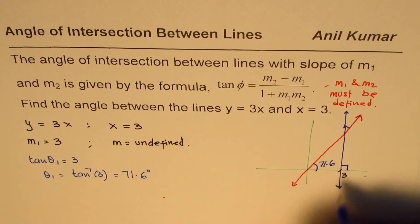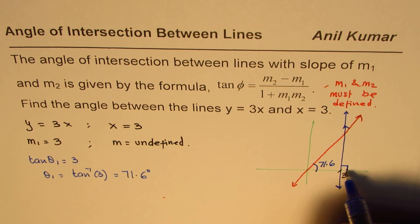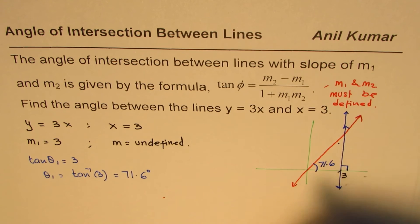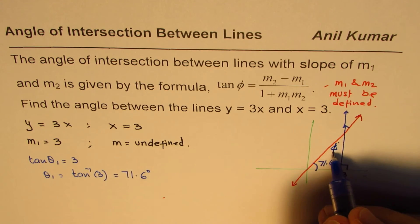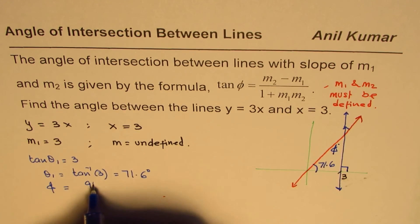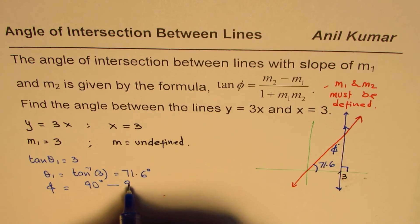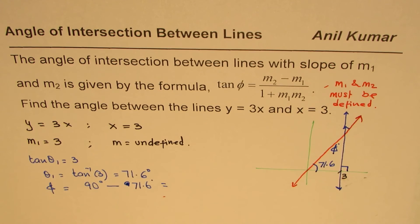Now we know this is 90 degrees. Since this angle is 90 degrees, we can find the other angle. Let us call this angle as phi. So the angle between the line is 90 degrees minus 71.6 degrees. So we will do that.